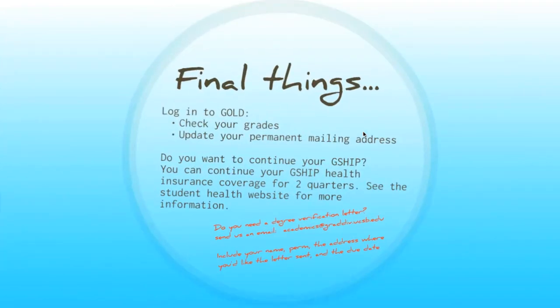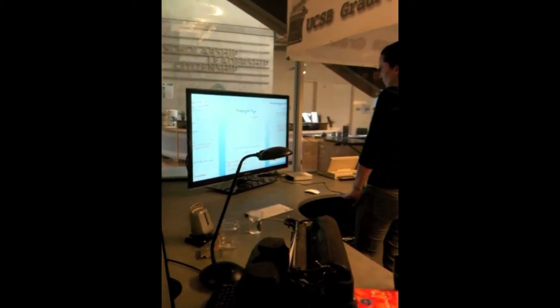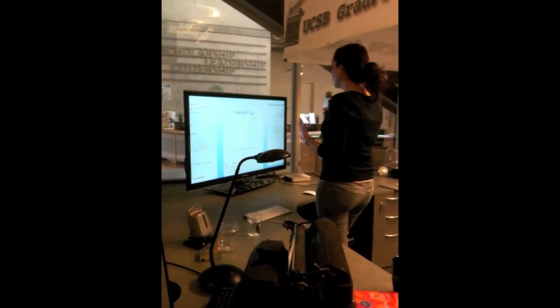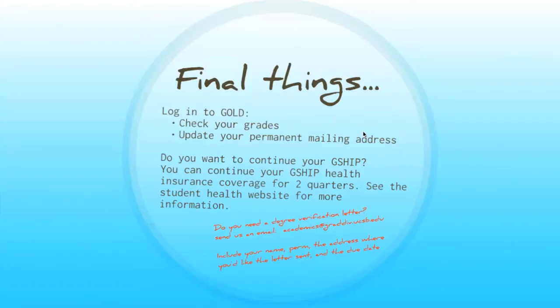Before you finish, log into GOLD one more time. Check your grades — check for any incompletes or no grades, or for any incompletes that might have switched to Fs or Us. Take this time to update your permanent mailing address. The diploma will be mailed to your permanent mailing address if you don't specify a diploma mailing address, and there's a fairly small window to specify that, so be sure to update it. There's also currently the ability to continue your GSHIP health insurance for two quarters following your degree, so check the student health website for more information.